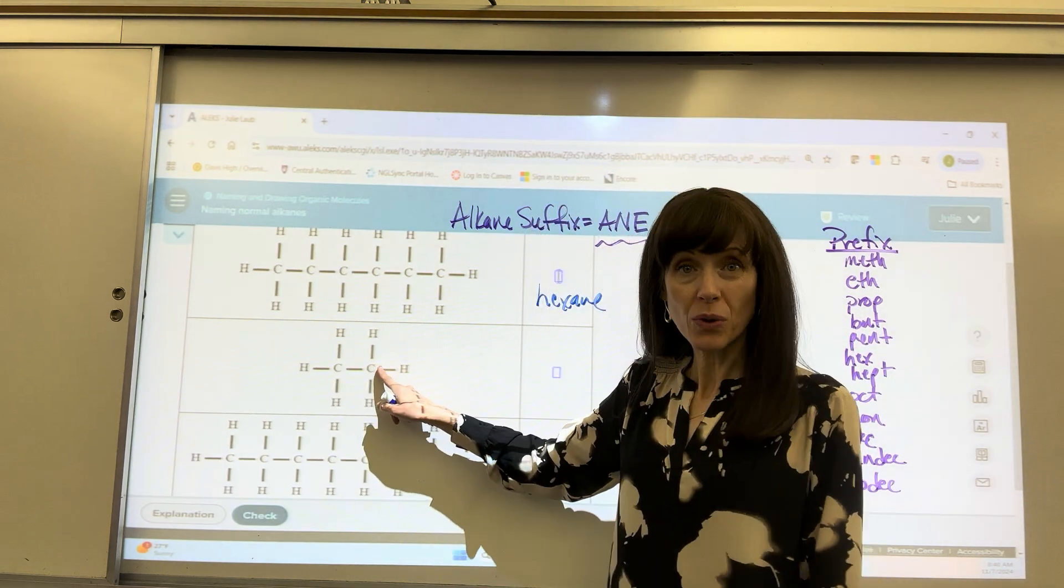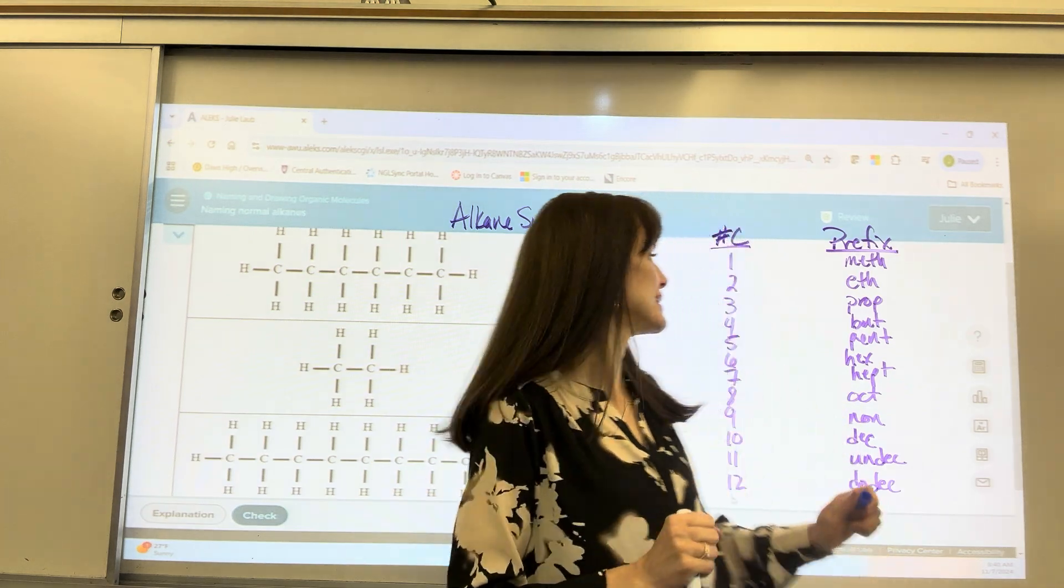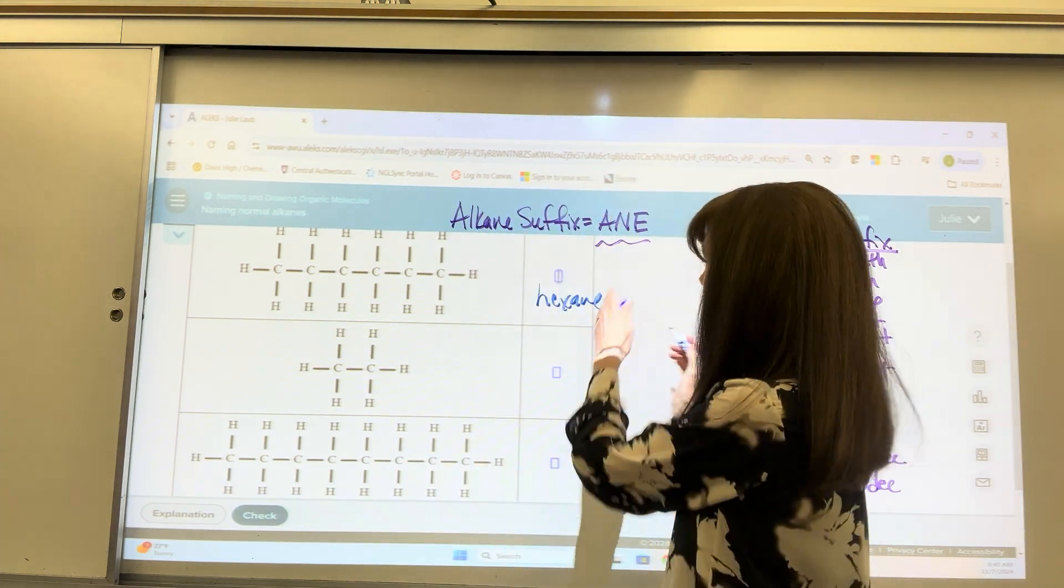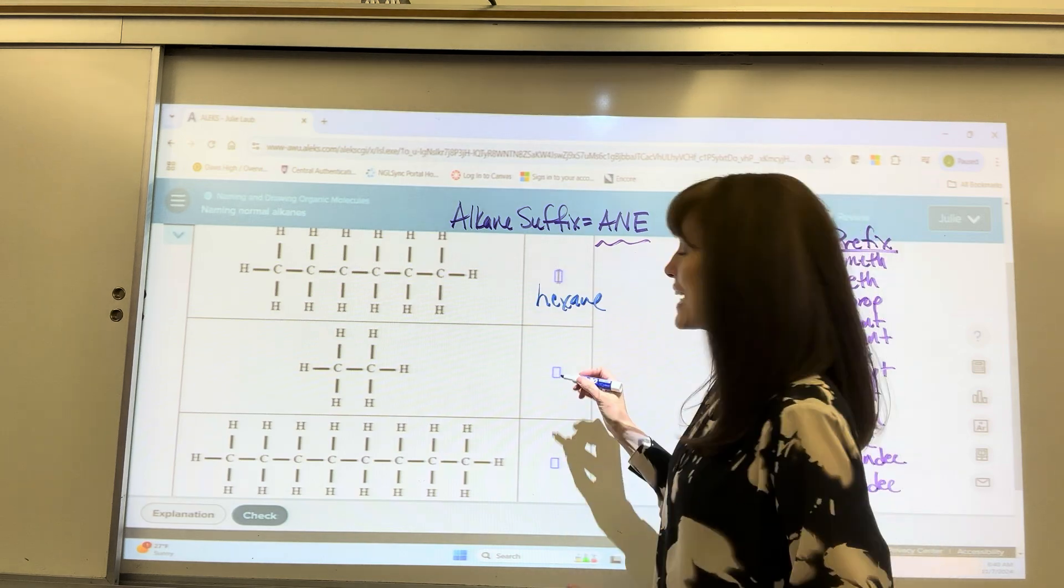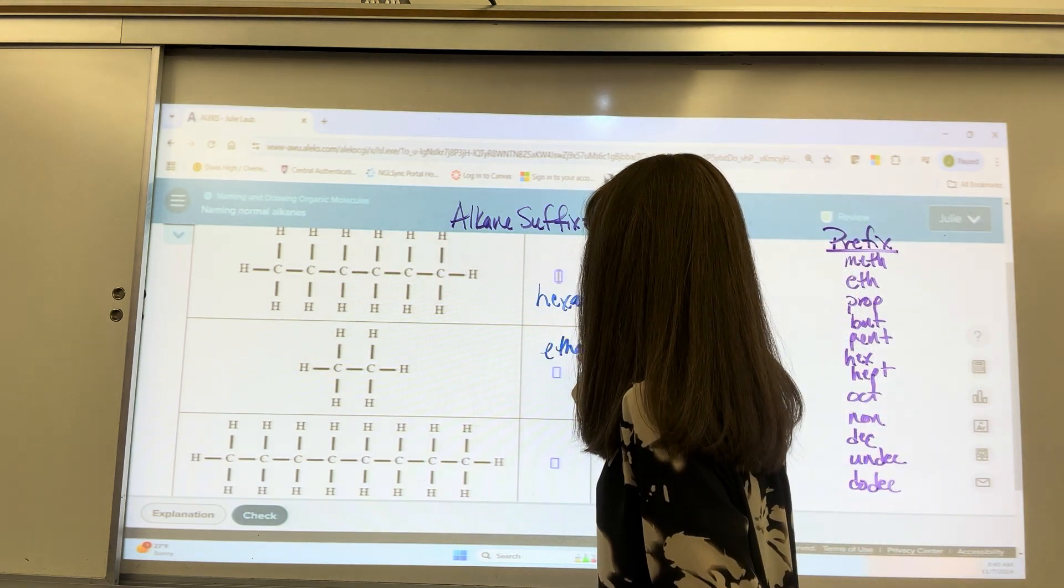Here I've got one, two carbons. The prefix for two is eth. They're single bonded. Put the suffix as A-N-E. That is ethane. Nice.